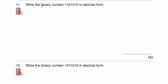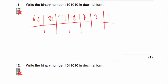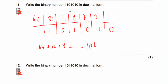Let's have a look at question 11. Question 11 says, write the binary number 1101010 in decimal form. Starting off with our columns: 1, 2, 4, 8, 16, 32. Checking — that's six, but our number has seven digits, so we need one more: 64, because 32 times 2 is 64. Our number is 1101010. So 64 plus 32 equals 96, plus 8 equals 104, plus 2 equals 106. The number 1101010 in decimal form is 106.